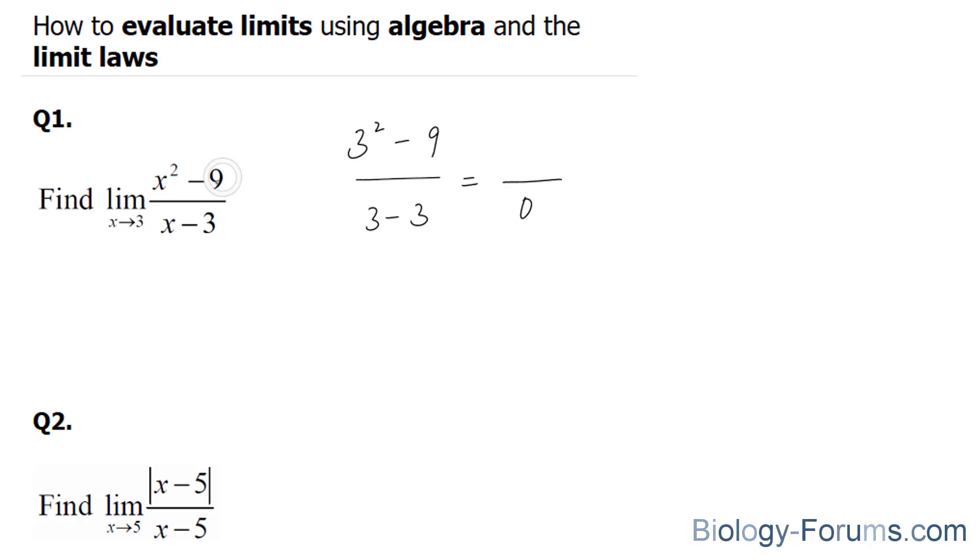So if we take the square root of both of these and we factor it, using the difference of squares method, you'll end up with x minus 3 times x plus 3 over x minus 3. And at this stage, you can cancel out these two terms, and now you can evaluate this expression at x is equal to 3, and you end up with 6. So the limit is 6.